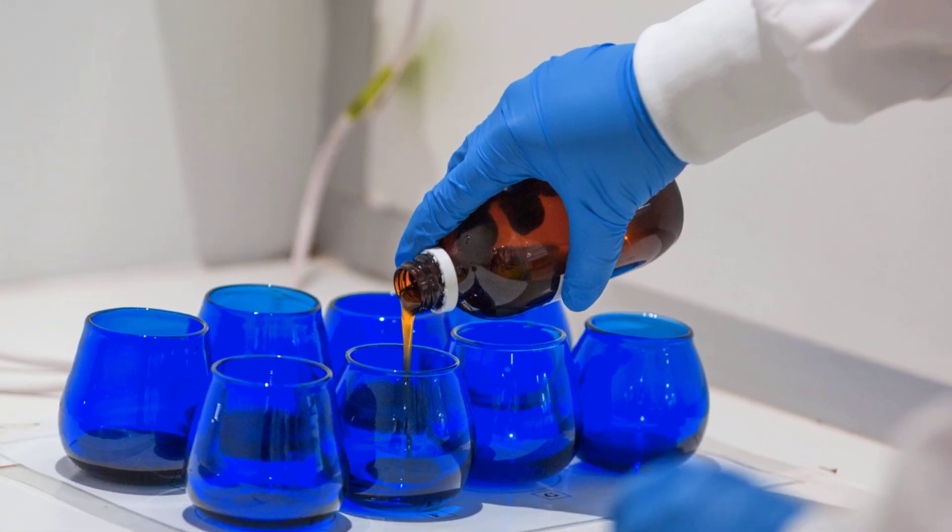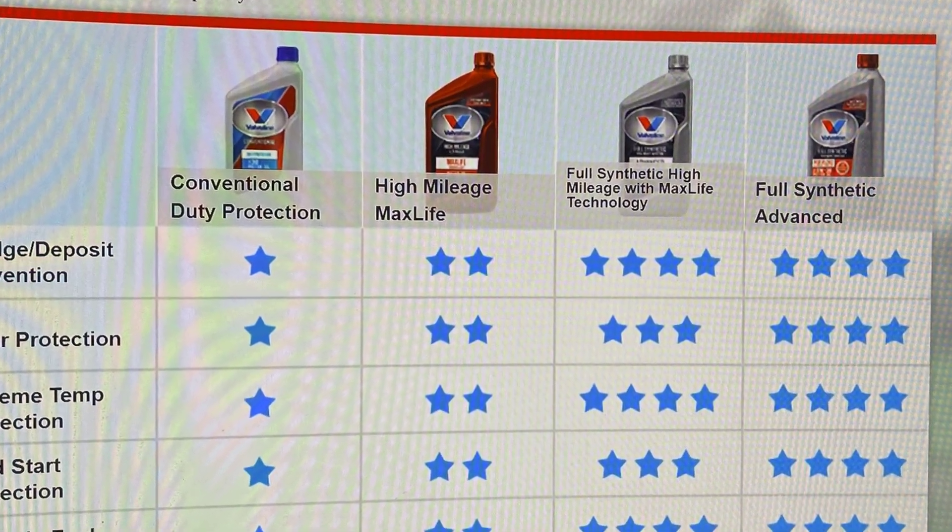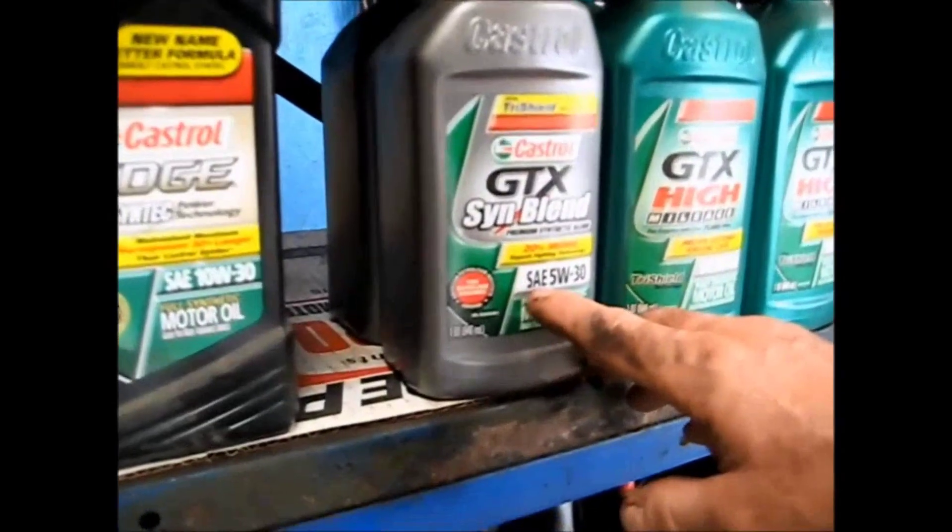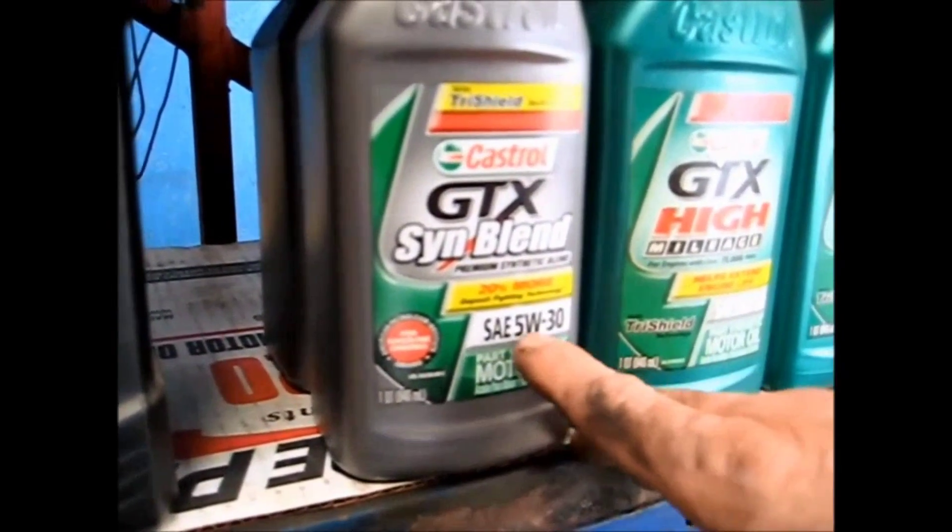For most drivers, the real difference is minimal. The seal conditioners may help with minor leaks, but they do not transform the underlying chemistry. The numbers reveal that the high mileage label is more about marketing than measurable engine protection. When it comes to real value, ingredient scrutiny matters far more than front label promises.